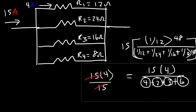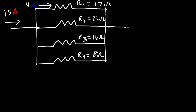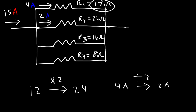Once we have one current, the others are easier to find. Comparing R1 and R2: R2 is 24 ohms, which is double R1 at 12 ohms. If one resistor doubles in value in a parallel circuit, its current is half that of the smaller resistor. So I2 equals 4 divided by 2, which is 2 amps.